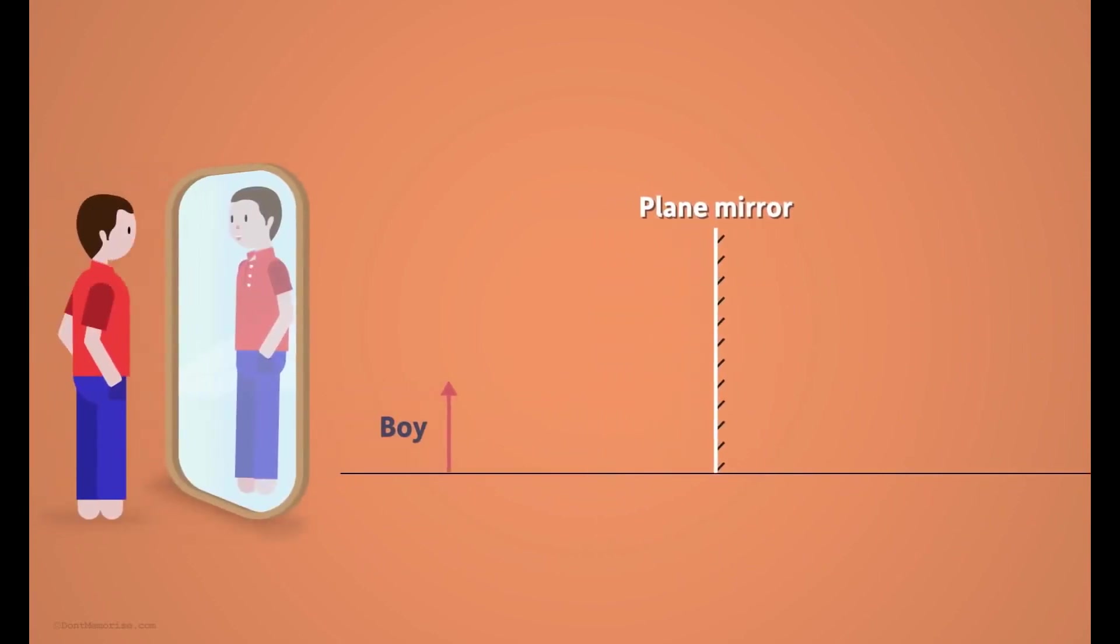When we see the image in the mirror, it seems to us that the image is formed somewhere behind the mirror. But there is nothing behind the mirror, right? For us, the light rays seem to come from the location present behind the mirror.